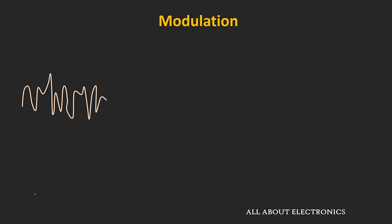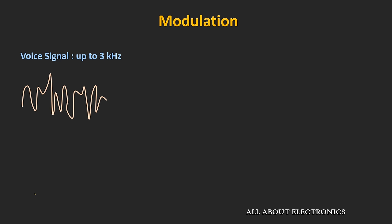If we consider the speech signal or the human voice signal, it contains frequencies up to 3 kHz. And if we consider the entire audible spectrum, it varies from 20 Hz to 20 kHz. This low frequency message signal is known as the baseband signal. If we want to transmit this baseband signal over a far distance, there are some challenges — the baseband signal cannot be transmitted directly.